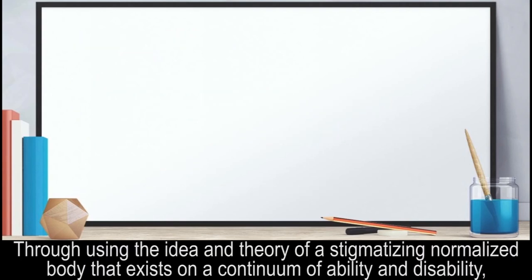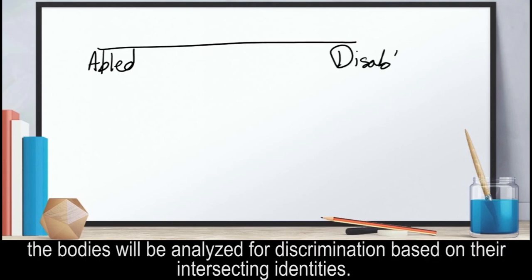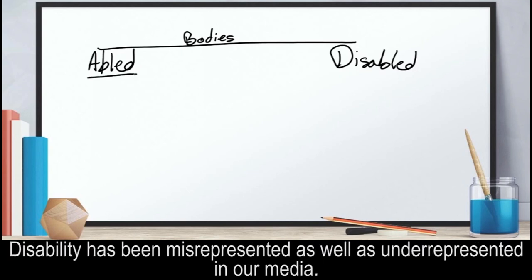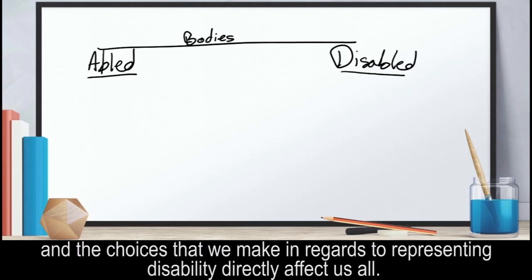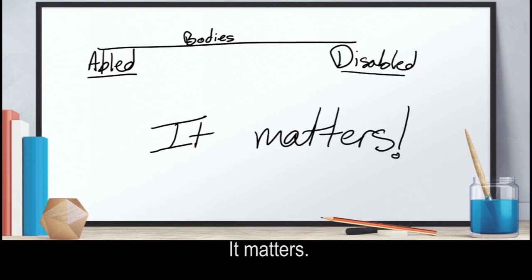They're using the idea and theory of a stigmatizing normalized body that exists on a continuum of ability and disability. The bodies will be analyzed for discrimination based on their intersecting identities. Disability has been misrepresented as well as underrepresented in our media. We are not disabled or abled, but on a continuum. And the choices that we make in regards to representing disability directly affect us all. It matters.